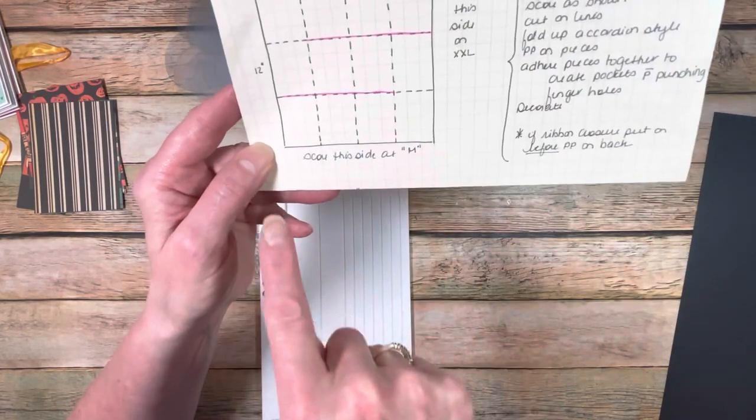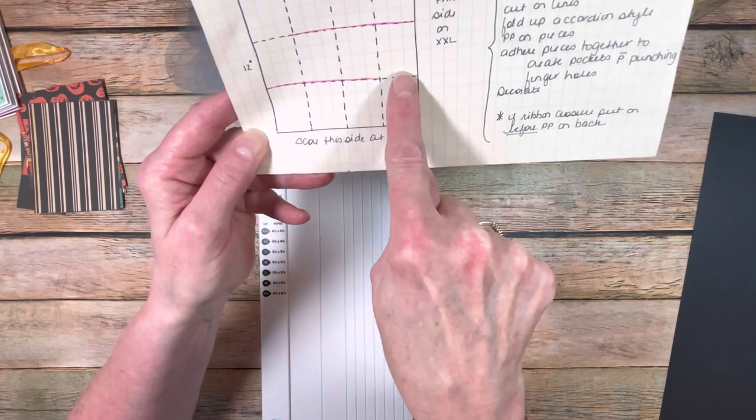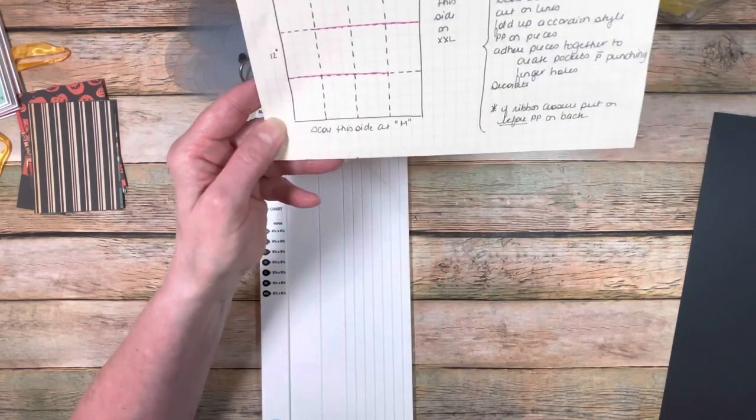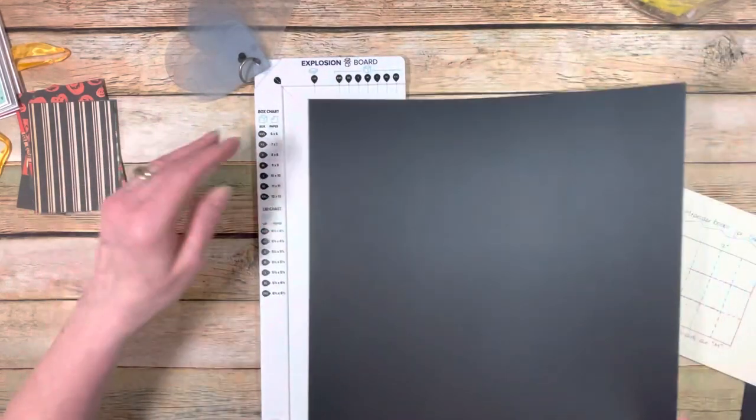You're going to cut one score line all the way up and stop and leave this attached, and then you're going to cut this one all the way over and leave that one attached. That's all there is to it. So let's go through it as an example.